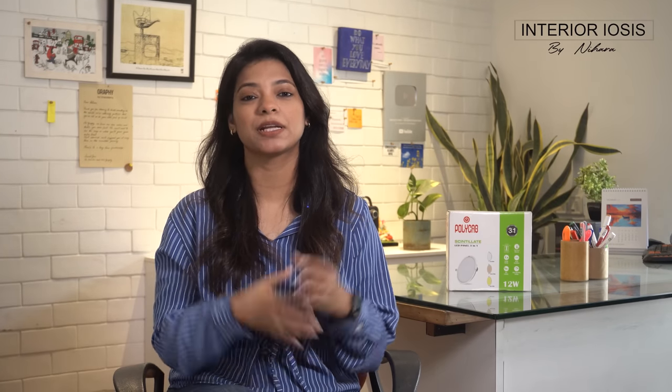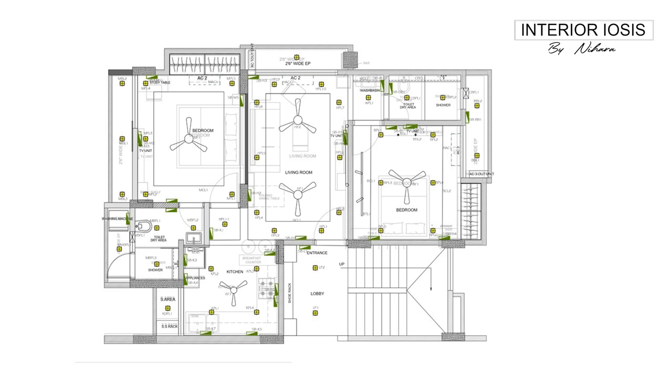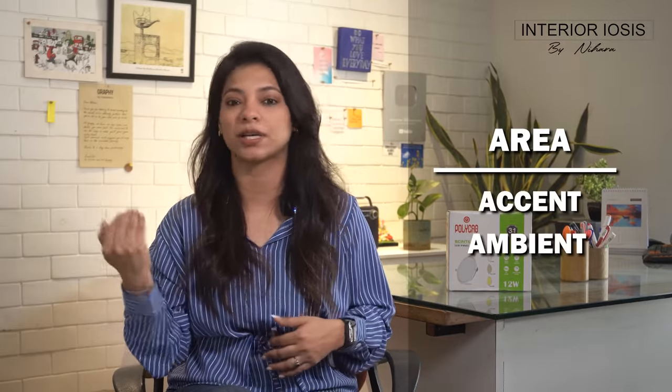After understanding the client brief and requirements, first we make a furniture layout, and then we start adding lights based on the furniture layout and the functionality of the space. After that, we add more lights to enhance the aesthetics. We divide lighting into two parts: first area lighting, then we add accent lights, ambient lights, or task lights. Area lighting means we uniformly light up the ceiling with equally distributed lights.